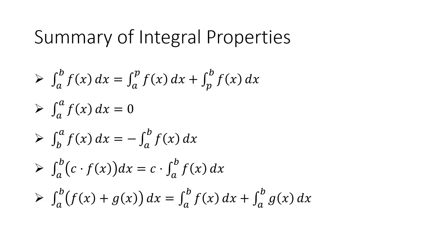Here's a summary of all the properties: breaking up an integral's interval into two subintervals; the integral equaling zero when we start and end at the same point; switching the bounds introduces a minus sign; multiplying by a constant multiplies the area; and adding two functions adds the areas. These are the properties we'll use as I work through several examples.